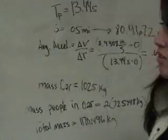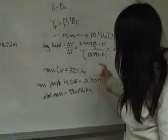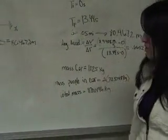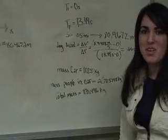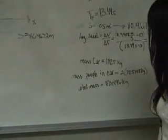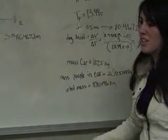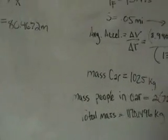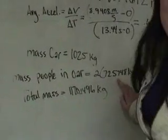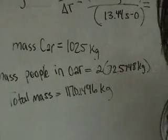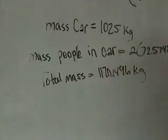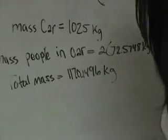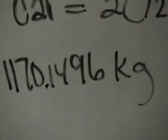So we need the mass of the car in order to find the force of the car. And the mass of the car we found to be 1025 kilograms. And the mass of the people in the car, which is Frankie and Andrew, was 72.5748 kilograms. We multiplied that by two, since there's two people. And we get the total mass, which is 1170.1496 kilograms.